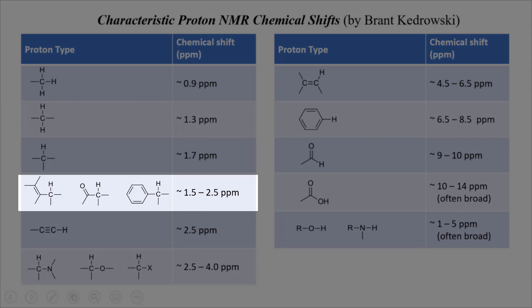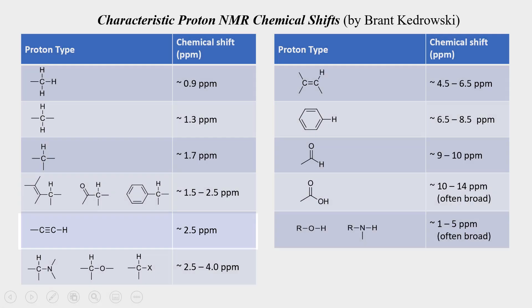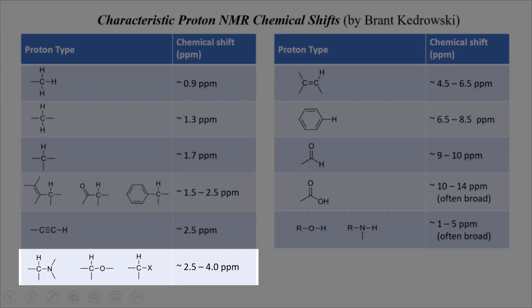When protons are near a double bond, they're deshielded somewhat by it and get pushed to slightly higher chemical shifts. 1.5 to 2.5 parts per million is typical for these protons. Protons that are attached to a carbon-carbon triple bond tend to show up at about 2.5 parts per million. Protons that are attached to a carbon that is attached to an electronegative element like nitrogen, oxygen, or a halogen tend to show up even a little further downfield at 2.5 to 4.0 parts per million. The extent of the chemical shift depends on the electronegativity of the element.